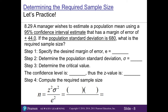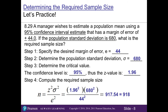Let's practice using Problem 29 from the textbook. A manager wishes to estimate a population mean using a 95% confidence interval with a margin of error of plus or minus 44. The population standard deviation is 680. Identifying our variables: E=44, σ=680, and at 95% confidence Z=1.96. Plugging into the formula: 1.96 squared times 680 squared divided by 44 squared gives 917.54, which rounds up to 918 as our required sample size.